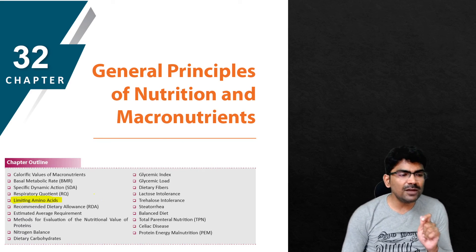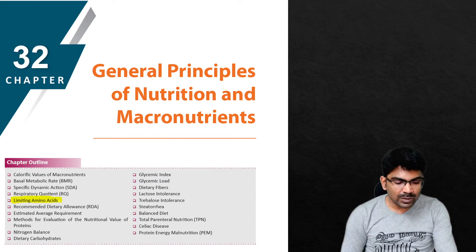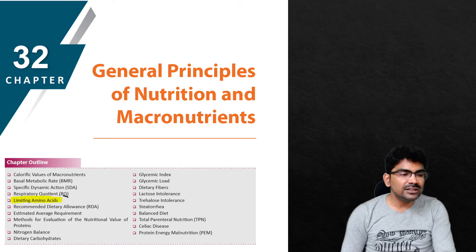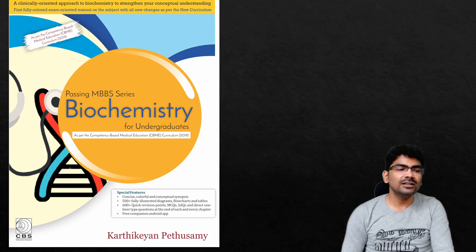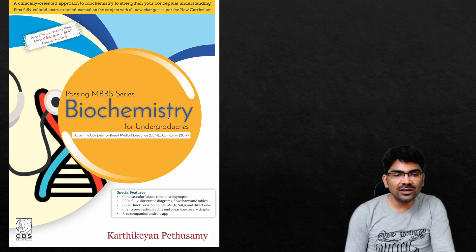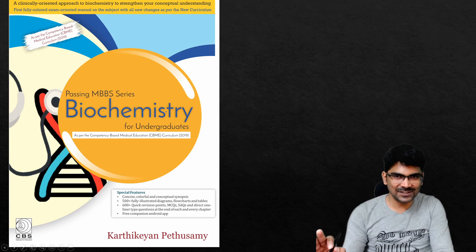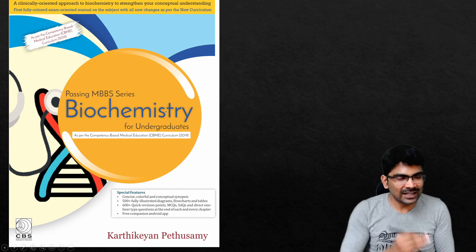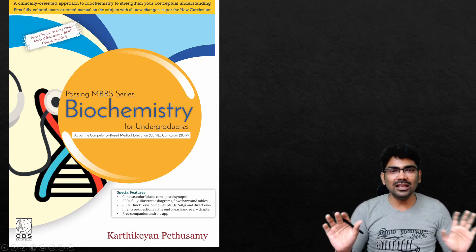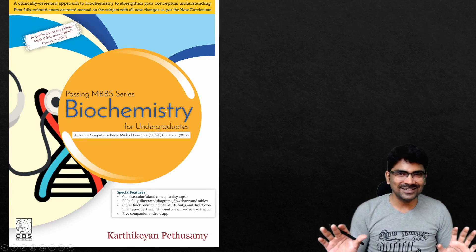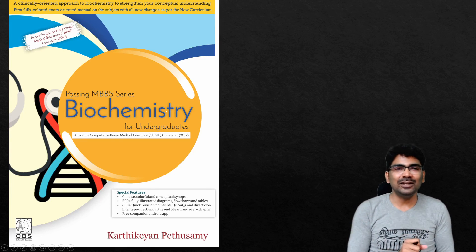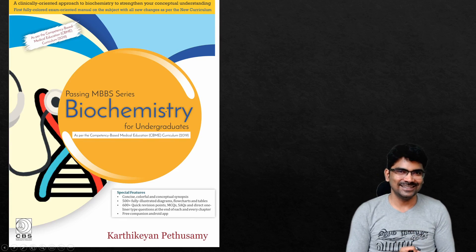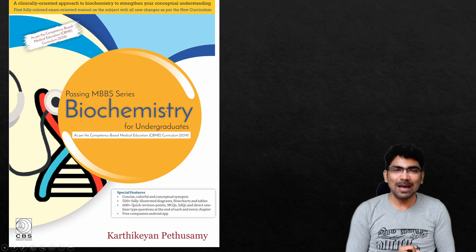The concept of limiting amino acids is explained in chapter 32 of my book, Biochemistry for Undergraduates. I hope you have understood what limiting amino acids are. If you have any doubt, feel free to ask me in the comment section. Happy learning!